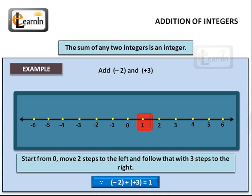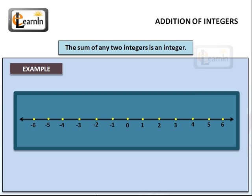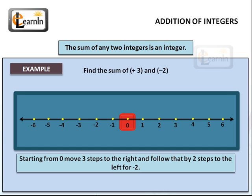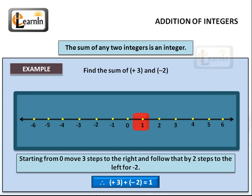You should notice that (−2) + (+3) = 1 is the same thing as 3 minus 2 equals 1. So we could have done this problem using the subtraction method, which is to start from 3 and move 2 spaces to the left for 1. Let's find the sum of plus 3 and minus 2. We start from 0 on the number line, move 3 steps to the right for plus 3, and follow that with 2 steps to the left for minus 2, and we get to positive 1. So (+3) + (−2) = 1, or 3 minus 2 equals 1.